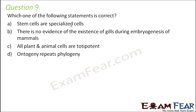Option B: there is no evidence of the existence of gills during embryogenesis of mammals. This is also incorrect because if you look at the process of embryogenesis — that is, the formation and development of the embryo of an organism — gill slits were very well present during embryogenesis.